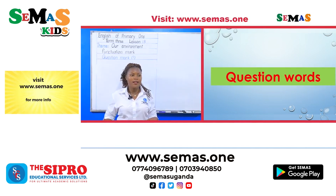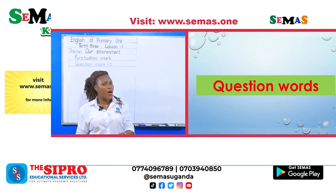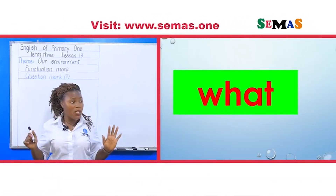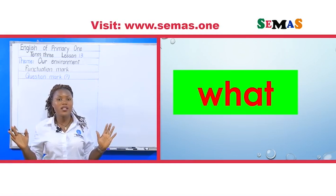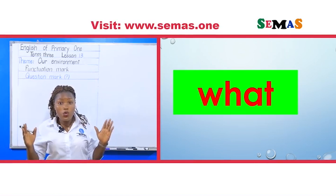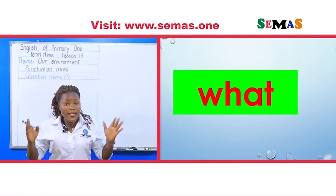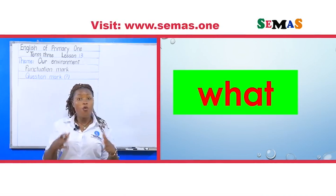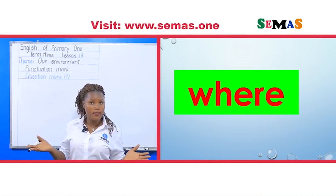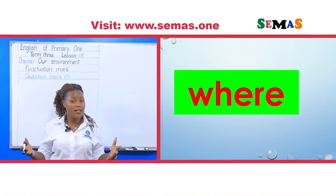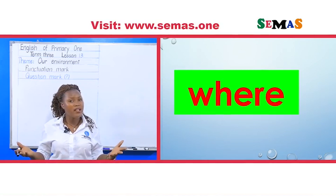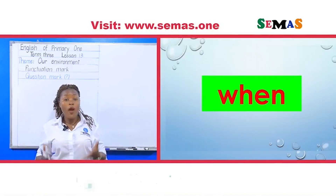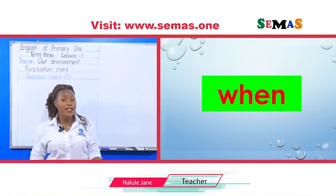The first questioning word is 'what.' If someone asks you 'what,' that means that person wants to know exactly what happened. Then we have 'where.' When you hear 'where,' this is a question about a place.